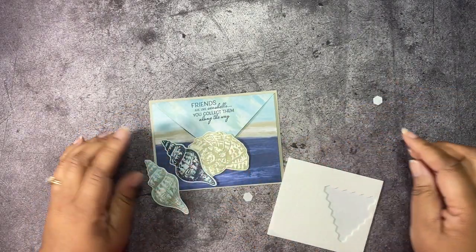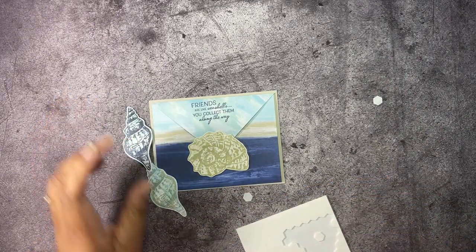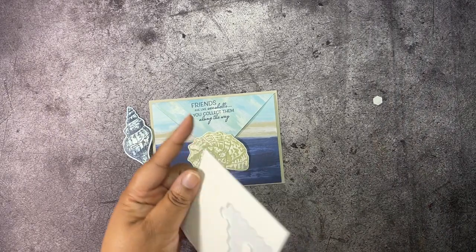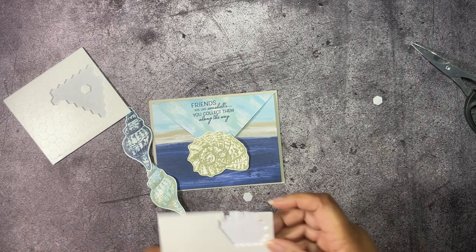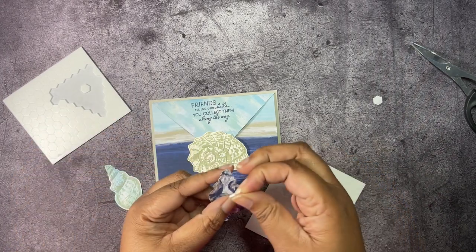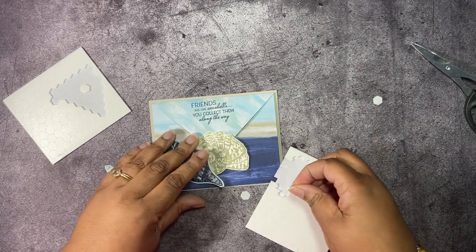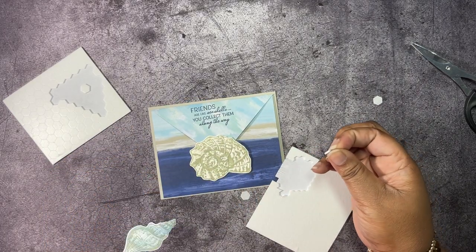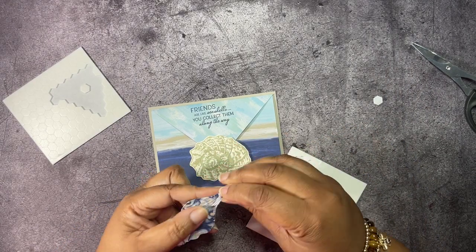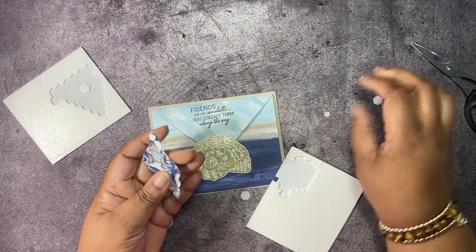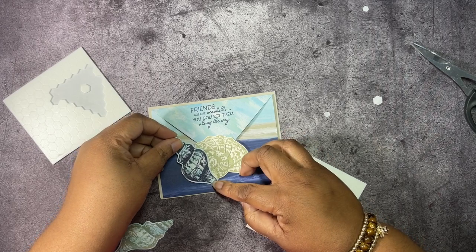Then we're going to pop these up on here just like this. I am going to put a dimensional. Let's get some scissors here. Actually no, let's just use our minis. Let's use some mini dimensionals. I'm going to put one at the top here and one at the bottom. And this should secure it just like we need it to. Just going to place that right there.